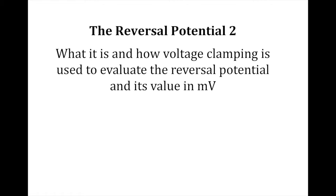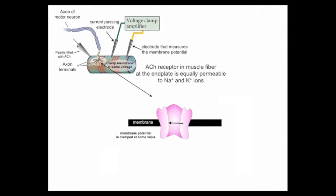This is the second movie on the reversal potential. Here I'm going to explain what it is and how voltage clamping is used to evaluate the reversal potential and its value in millivolts. I'm going to show an acetylcholine receptor to illustrate what happens when acetylcholine binds the receptor. The bottom line, and this is very important, is that the receptor is equally permeable to both sodium and potassium ions.